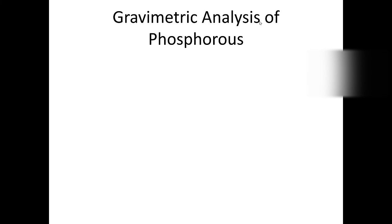Moving on to the second part of the lab — gravimetric analysis of phosphorus in fertilizer. For this part of the lab and also the last part, make sure you share results with your group members in the lab, because they'll be given two different fertilizers. Those with fertilizer A will share results, those with fertilizer B will share results, and you'll need to include this in your lab report.